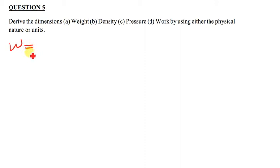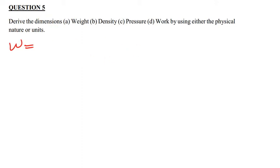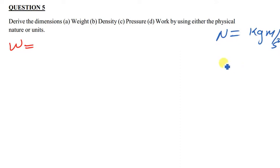Weight is in Newtons, which is simply just like a force. One Newton is equivalent to kg·m/s². So the units for weight are simply just Newtons, and one Newton is simply just kg meters per second squared. These are the units for weight.